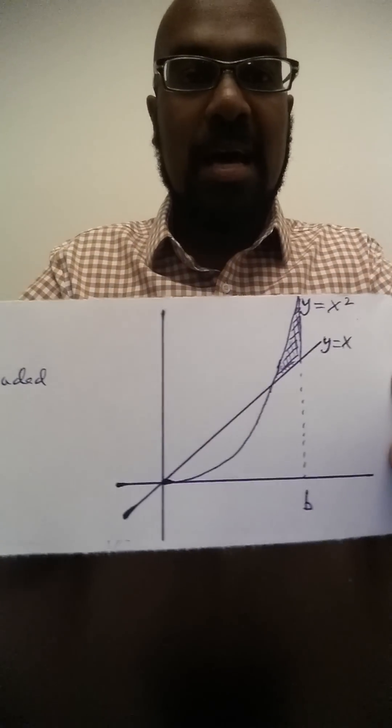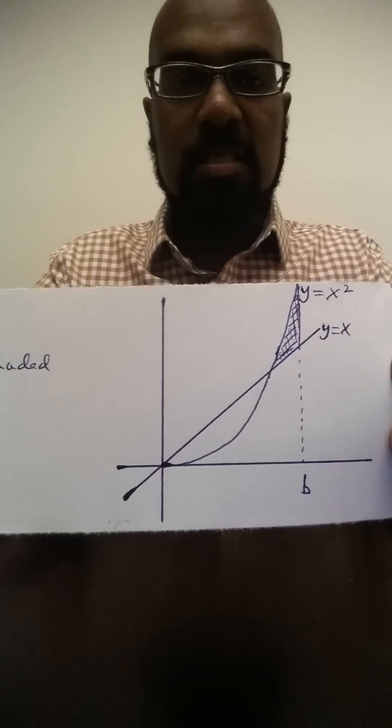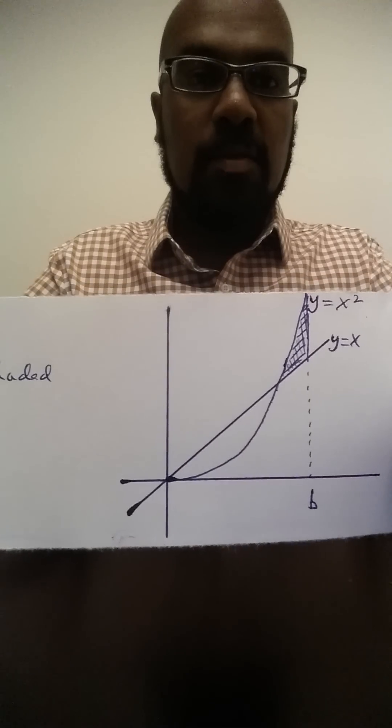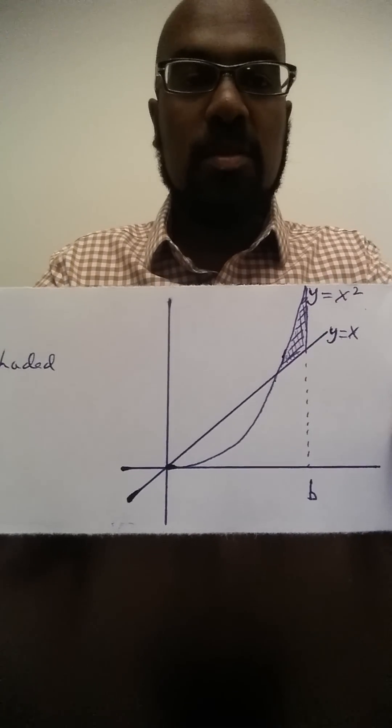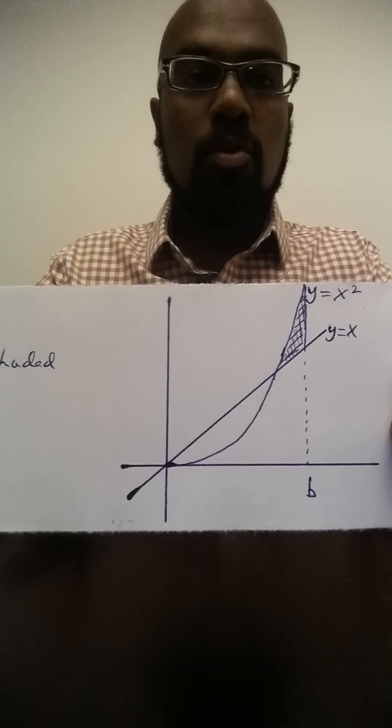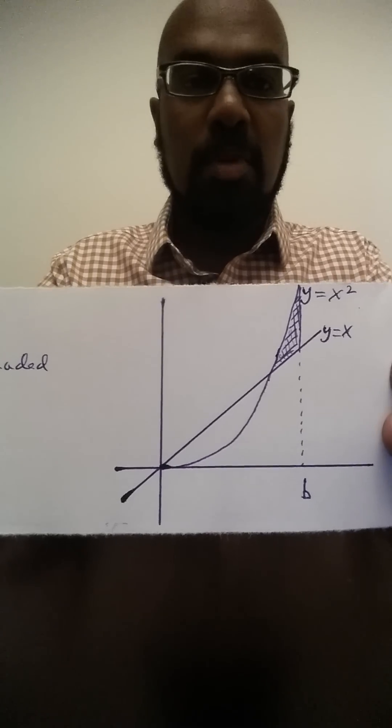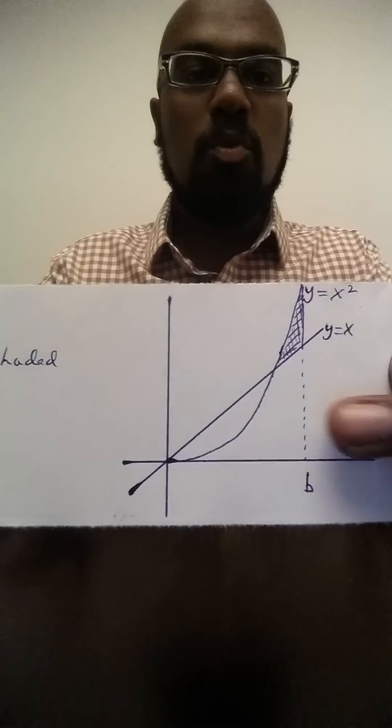So here we have the graphs of the functions y equals x and y equals x squared, and this is the shaded region which is the area between the two curves in the portion where x squared is above x up to this point b.